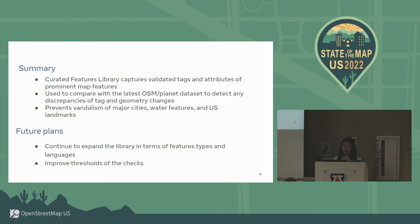In summary, the curated features library captures validated tags and attributes of prominent map features. We use it to compare with the latest OSM and detect any discrepancies of tags and geometry. We also use this to prevent vandalism of major cities, water features, and US landmarks. Our next steps are to improve the thresholds of the checks and continue to expand the library in terms of feature types and languages.